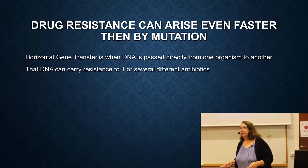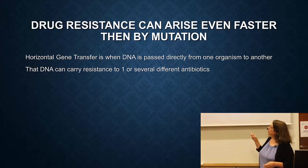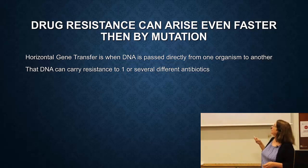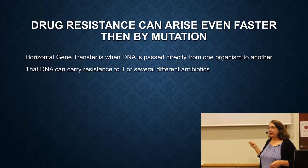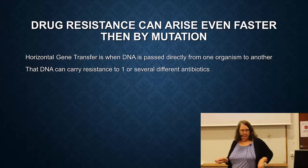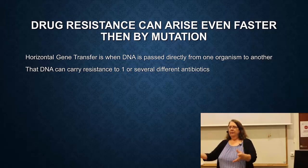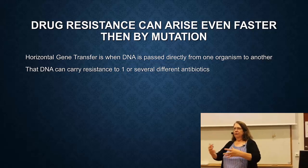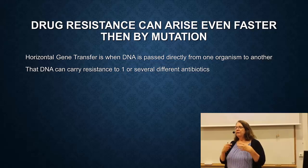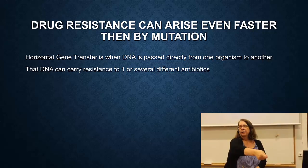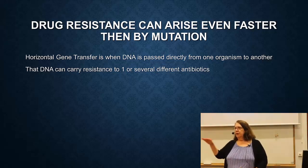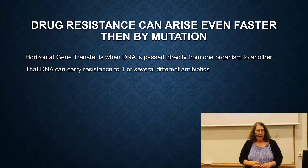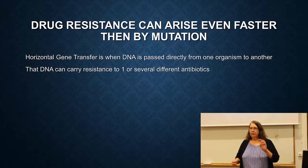Drug resistance can arise much faster through something called horizontal gene transfer, where DNA is passed directly from one organism to another. That DNA can carry resistance to one or several different antibiotics. This is the equivalent of me handing my DNA directly to someone else and them taking it up. This happens fairly commonly in bacteria, and there are three ways it can occur.